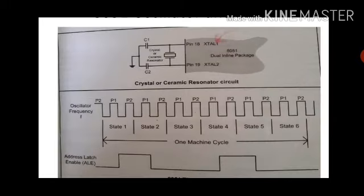As it is stated here, two clock pulses are stated as one state. There are six states. The six states are equal to one machine cycle. One machine cycle is equal to six states. Each state consists of two clocks.